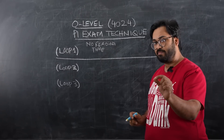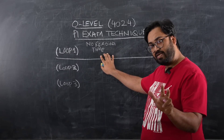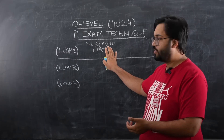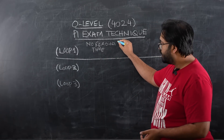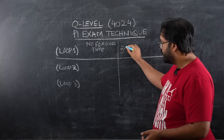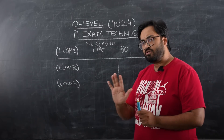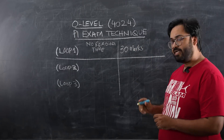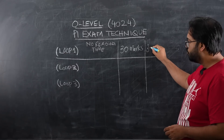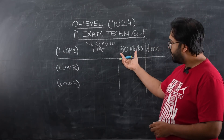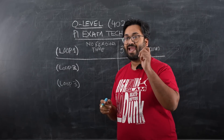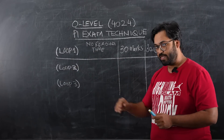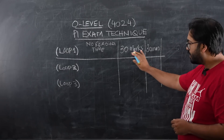The kind of questions I will not be doing in Loop 1 include probability, percentages, and ratios — these are easier topics but they involve reading time, so we're not going to do them in Loop 1. In Loop 1, we are aiming to score around 30 marks. Do not try to push beyond 35, because we want to keep time available for later. We will do 30 marks in 30 minutes.